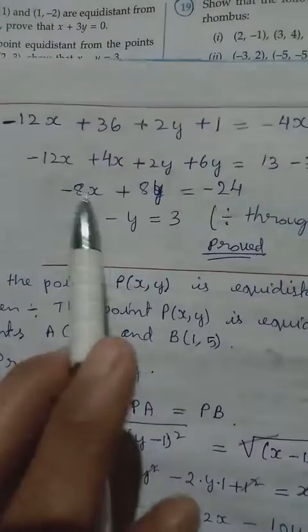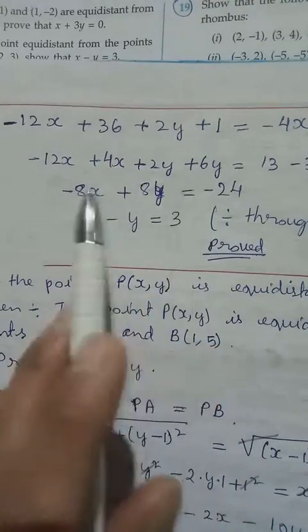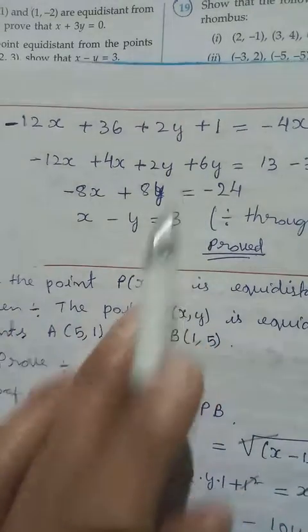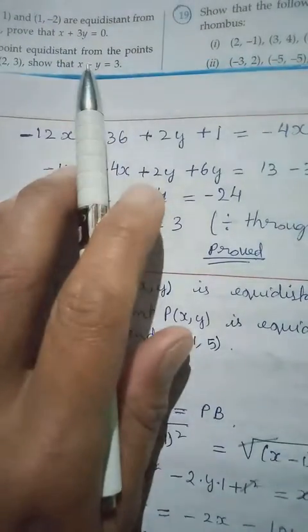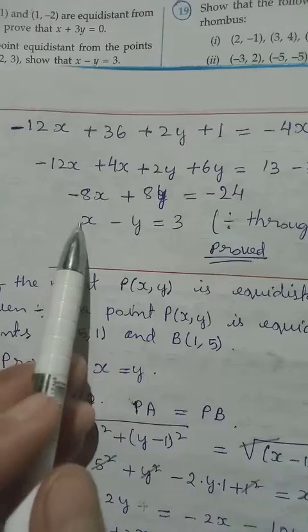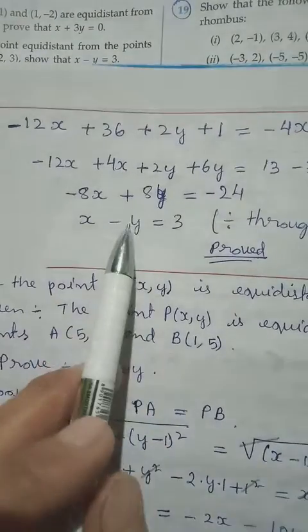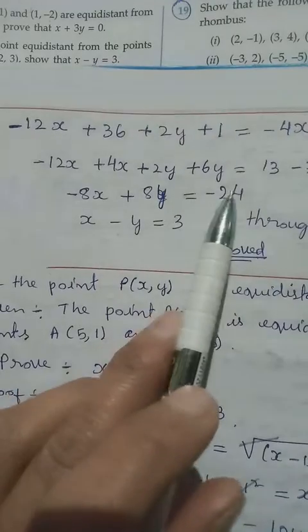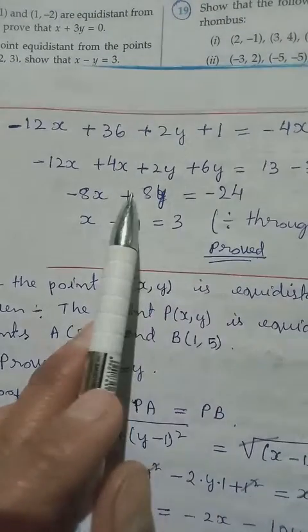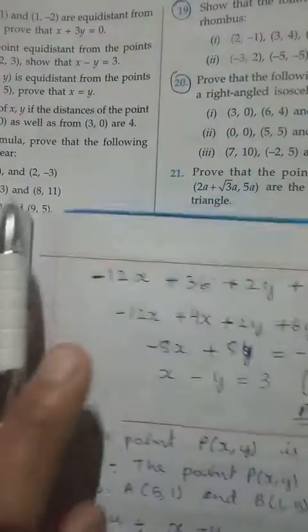The question wants us to prove x minus y equals 3. We have minus 8x plus 8y equals minus 24. Since 8 is common, we divide throughout by minus 8. Minus 8x divided by minus 8 gives x; plus 8y divided by minus 8 gives minus y; minus 24 divided by minus 8 gives 3. So we get x minus y equals 3, which is what the question required. Proved.